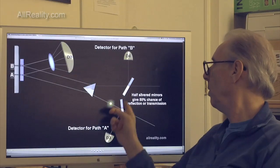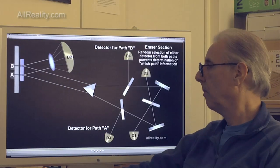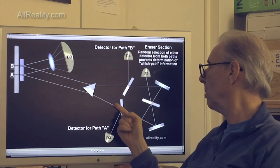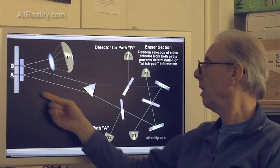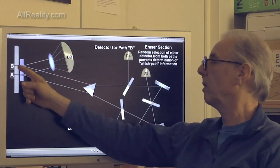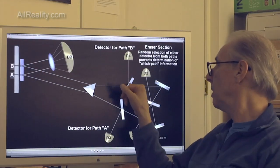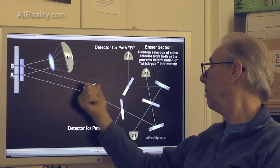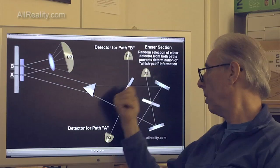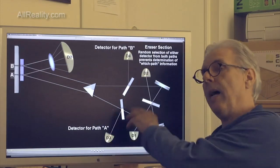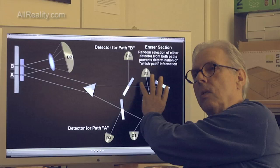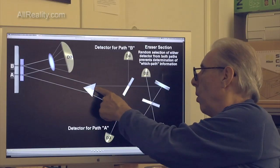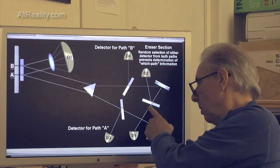The other half of the pair takes a much longer route, goes through a prism, hits a half-silver mirror, and gets detected. And there's an eight-nanosecond delay. And the same thing for the other path. So you're detecting which path information, detecting which path information, because you know if it hits D3, it came from A. If it hits D4, it came from B. Because these are half-silvered, half of the time, the photons are going to go through. And that's when they get to the erasing portion. This is why it's called the quantum eraser.